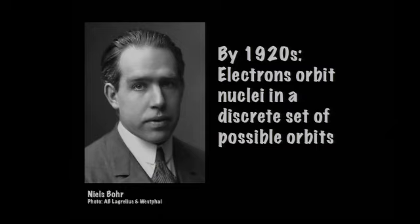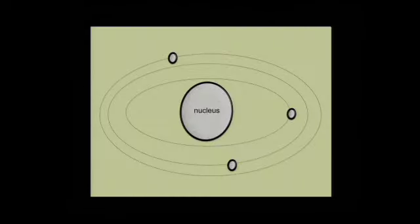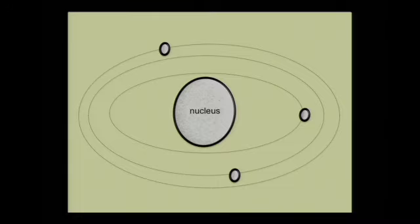Unlike in the solar system where you could have a body orbiting at pretty much any distance from the sun, in an atom you had to have your electrons orbiting on particular orbits — that's called the Bohr model. That orbiting gave rise to magnetic fields. When you have charged particles moving, creating currents, those currents create magnetic fields. When we measured those magnetic fields, they didn't account for all the magnetic field we saw — the motion of the electrons didn't explain everything. So we realized the electrons had to have intrinsic magnetic fields.